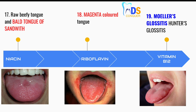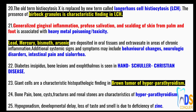Point number seventeen: raw beefy tongue and bold tongue of Sandwith is associated with niacin deficiency. Point number eighteen: magenta color tongue is associated with riboflavin deficiency. Point number nineteen: Moeller's glossitis or Hunter's glossitis is associated with vitamin B12 deficiency.